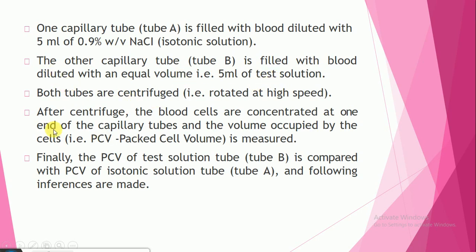Both tubes — tube A and tube B — are then centrifuged, meaning they are rotated at high speed. After centrifugation, the blood cells become concentrated at one end of the capillary tubes.